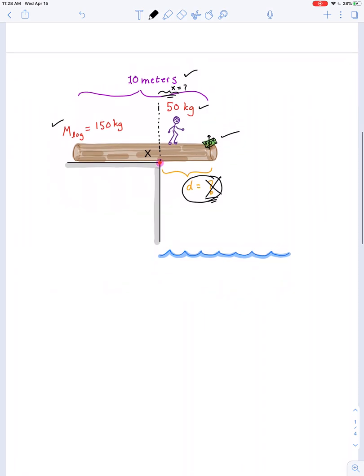In fact, what if we didn't know the exact mass or length? What if we just kept all these symbolic? So capital M, lowercase m, L and D in order to solve for X. Okay. So it starts with step number one.